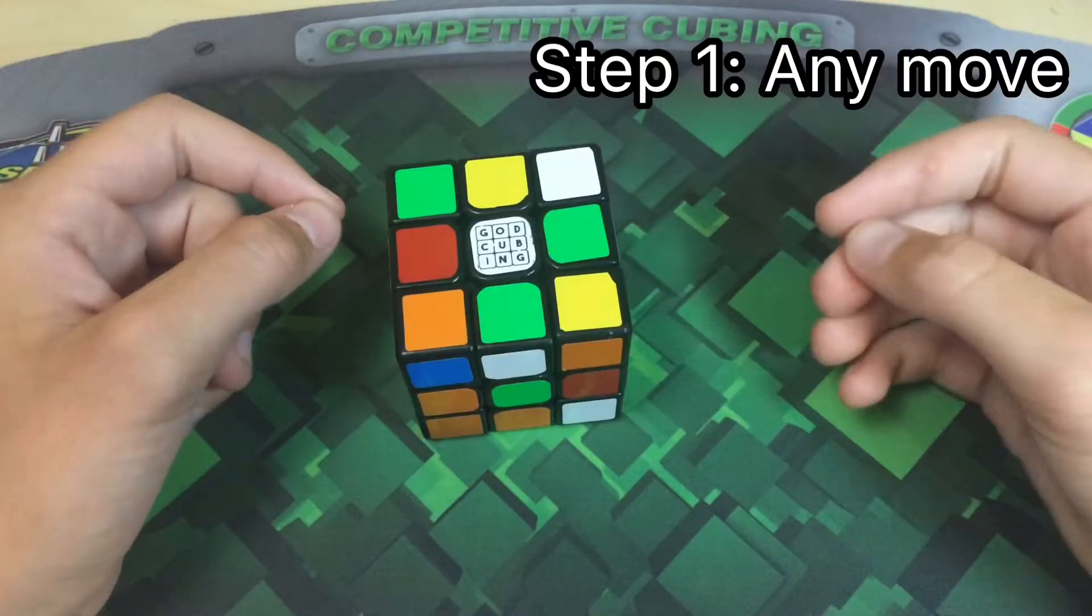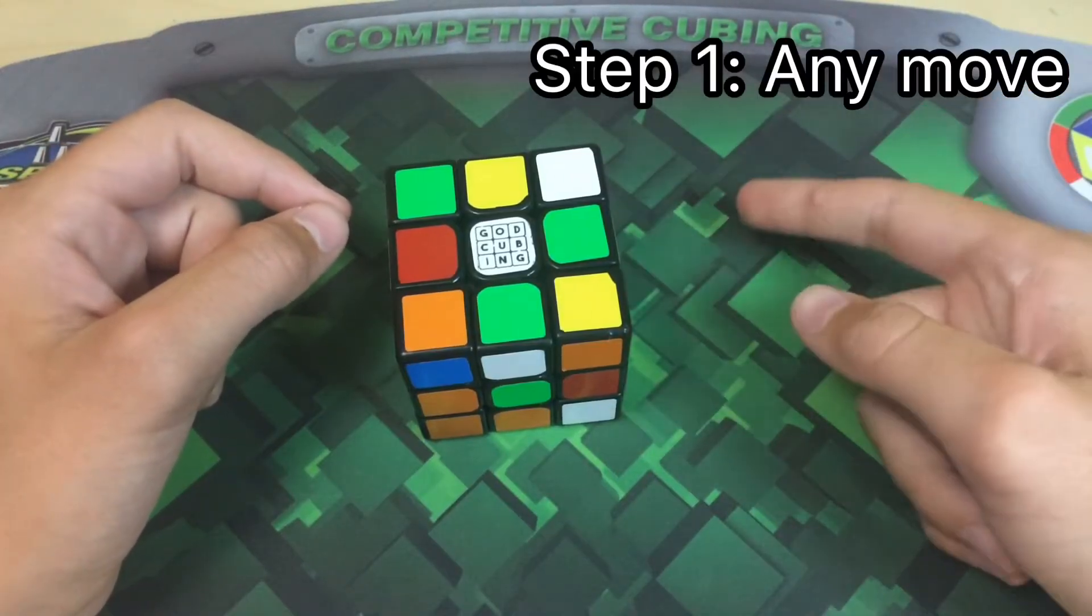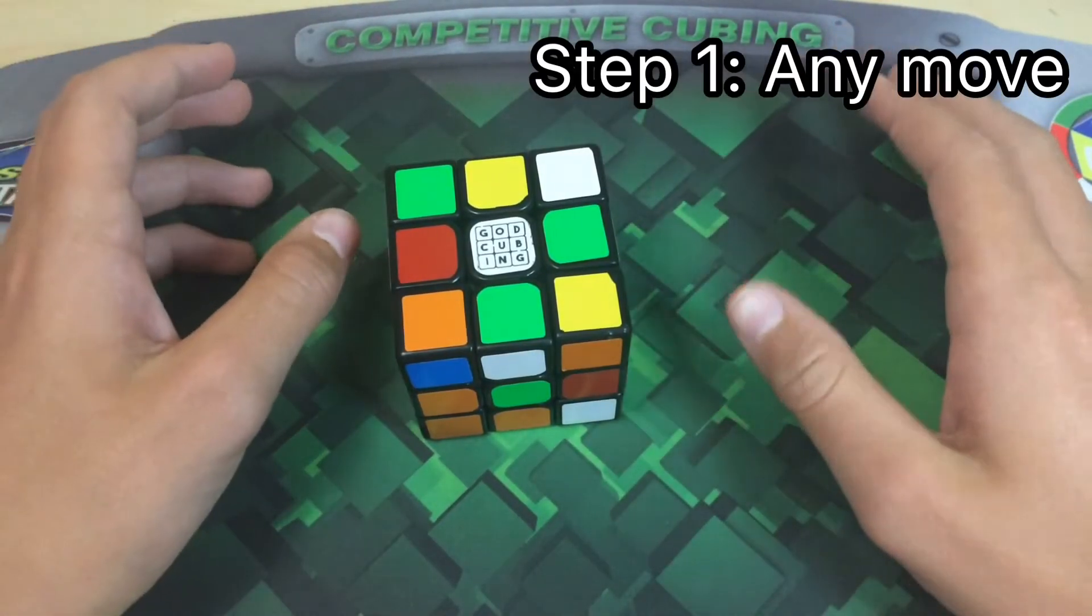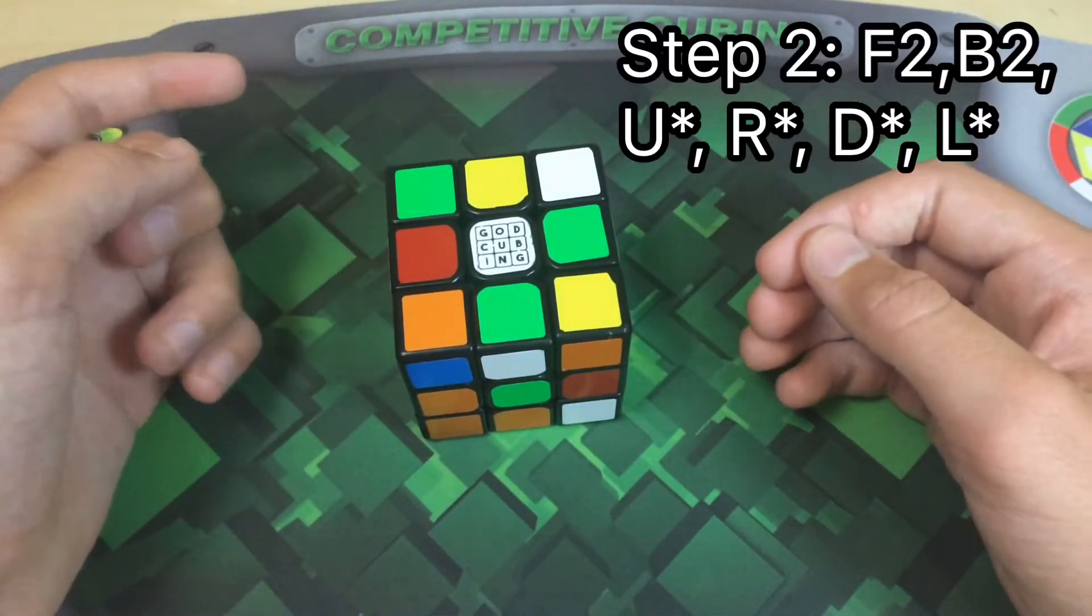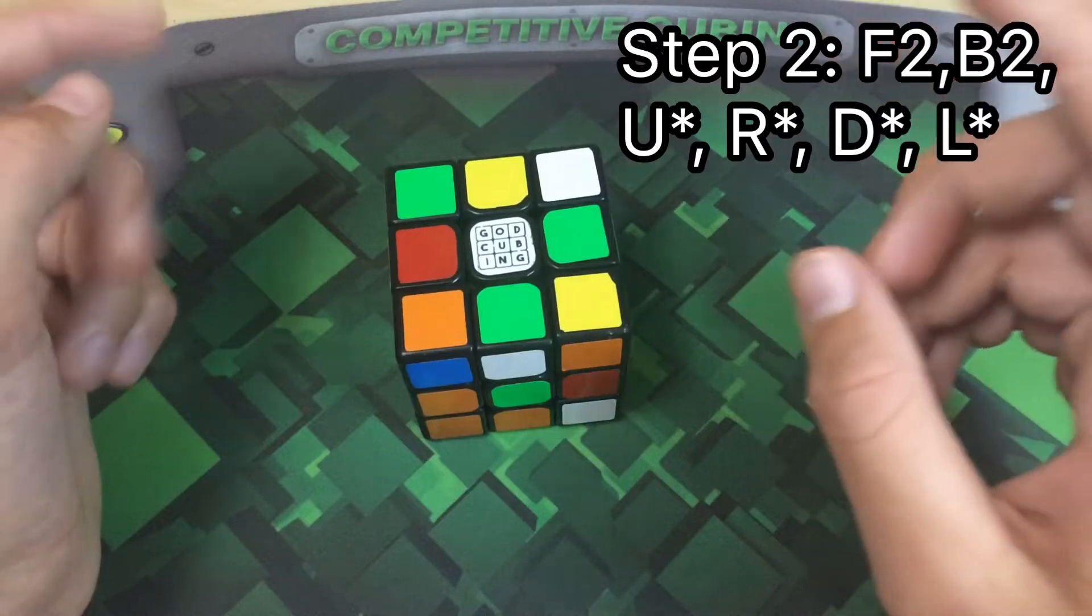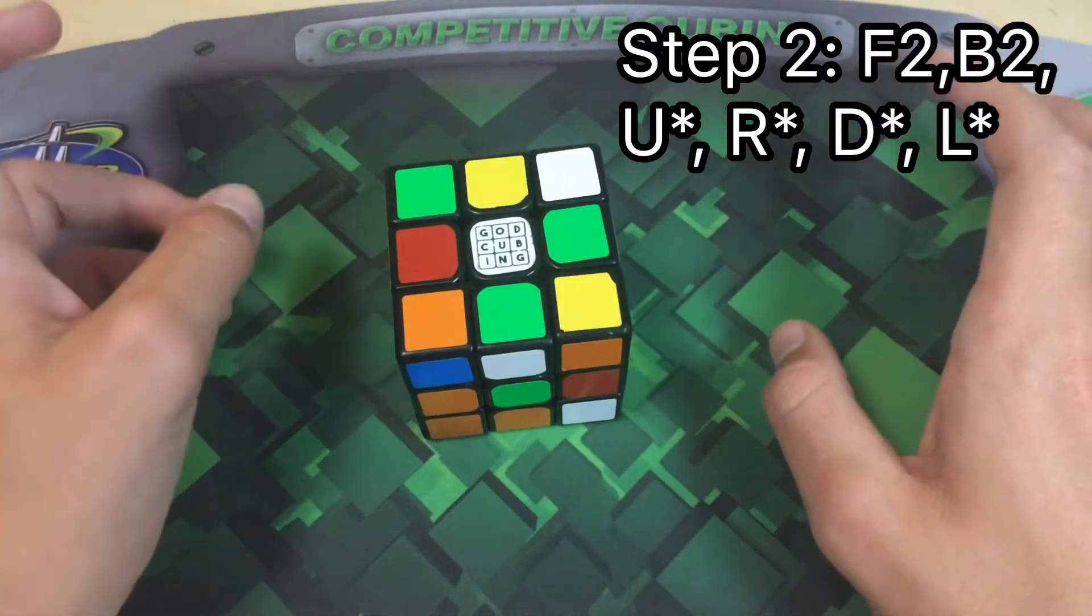During the first step, you can do any move. You can do either a single move or a double move on any side. And then in the second step, you can use single moves on all the sides except for the front and back, where you can only use double moves.